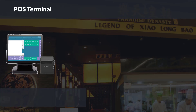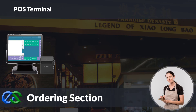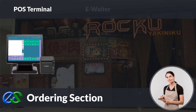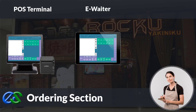You may add an ordering terminal for your floor staff to place orders. A receipt printer is for printing out the customer's present bill for payment collection. Besides adding an ordering terminal, the E-waiter concept allows your floor staff to place orders through a mobile tablet directly.